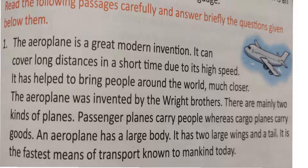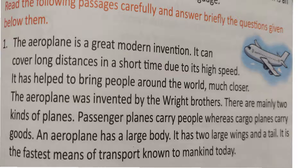It has helped to bring people around the world much closer. The aeroplane was invented by the Wright brothers. There are mainly two kinds of planes. Passenger planes carry people whereas cargo planes carry goods. An aeroplane has a large body. It has two large wings and a tail. It is the fastest means of transport known to mankind today. This paragraph is related to the aeroplane.